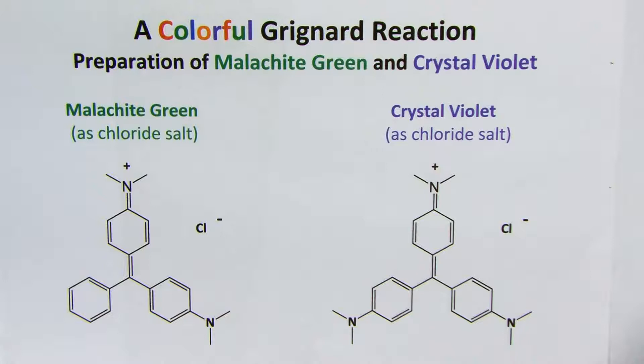For this lab we will use the Grignard reaction to produce one of two dyes with similar structure: malachite green, which has a beautiful blue-green color, and crystal violet, which is a beautiful blue-violet color.